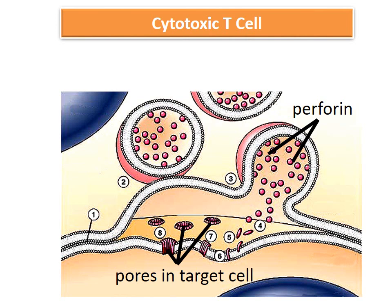This picture shows the perforin-induced killing mechanism by the cytotoxic T cell. The killer cell binds to its target, and as a result of binding, perforin-containing granules fuse with the plasma membrane and enter the target through exocytosis. When they combine with calcium, they change their shape from spherical to cylindrical.